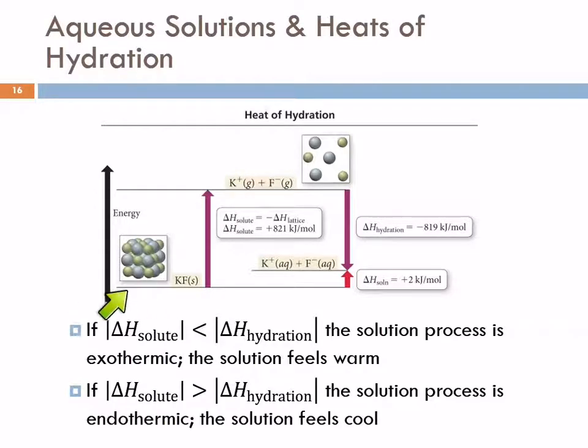So here we have potassium fluoride as a solid. So to separate this into ions in their gas state, that is equal to opposite in sign, the negative lattice energy. So we could look that up. So for this reaction, this is 821 kilojoules per mole to take solid potassium fluoride and make ions in the gas state.